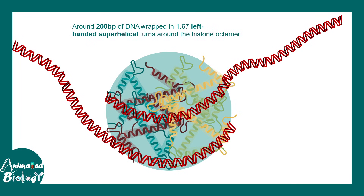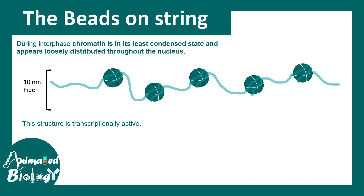There are interactions between the histone and the DNA. The DNA is negatively charged due to the presence of phosphate groups, and the histone is positively charged due to basic amino acids such as lysine and arginine. Around 200 base pairs of DNA are wrapped in 1.6 left-handed superhelical turns around the histone octamer. This is called a nucleosome, or the basic unit of the chromosome. At the simplest level of organization, the chromosome shows a beads-on-string appearance.